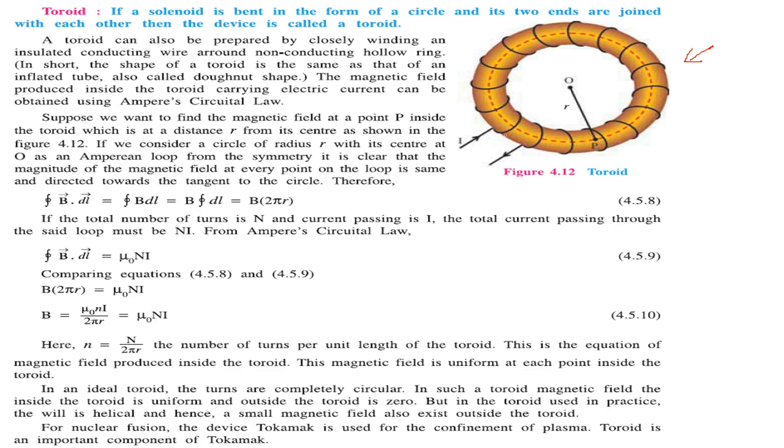A toroid can be prepared by closely winding an insulated conducting wire around a non-conducting hollow ring. As you see here, this is the wire wound over it. The shape of the toroid is the same as that of an inflated tube, like a donut shape. The magnetic field produced inside the toroid carrying electric current can be obtained using Ampere's circuit law.